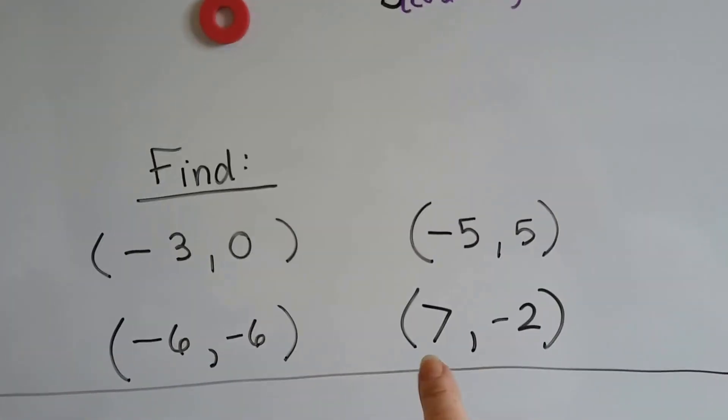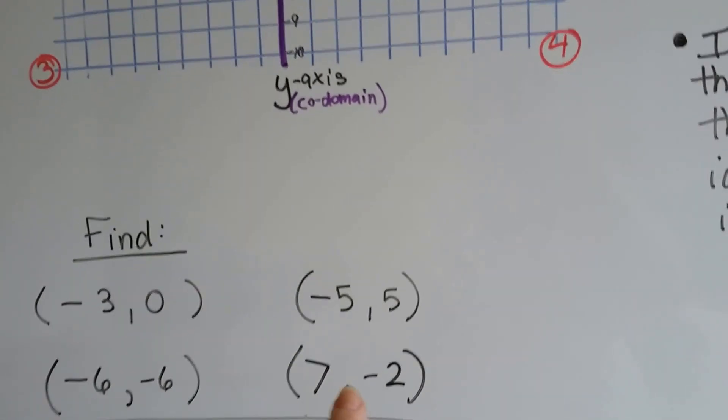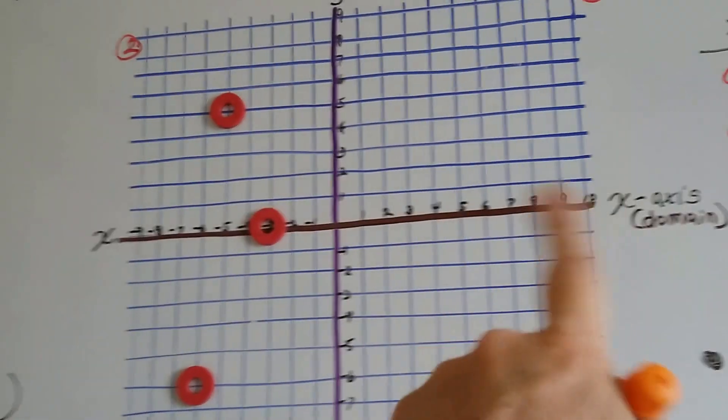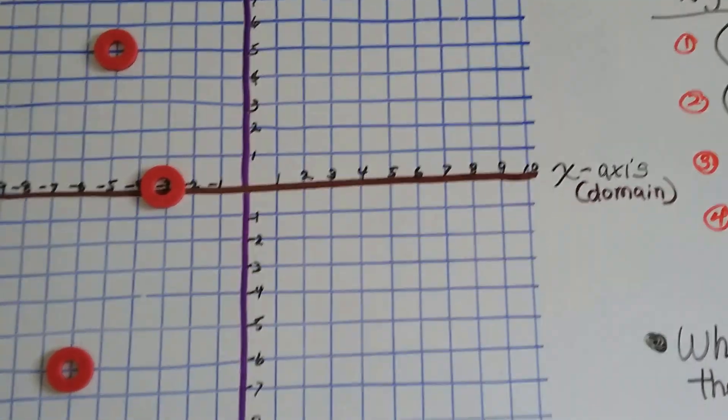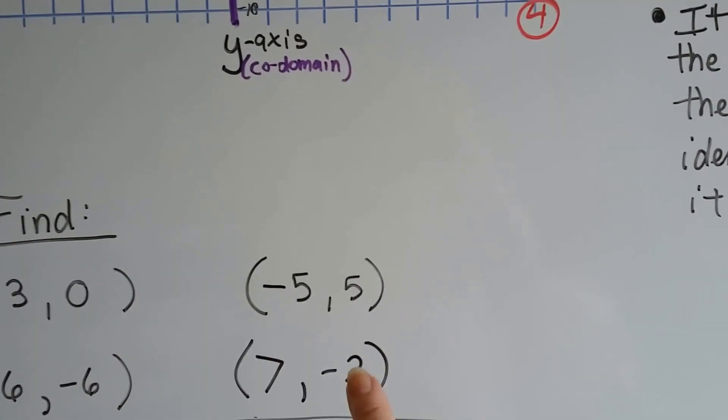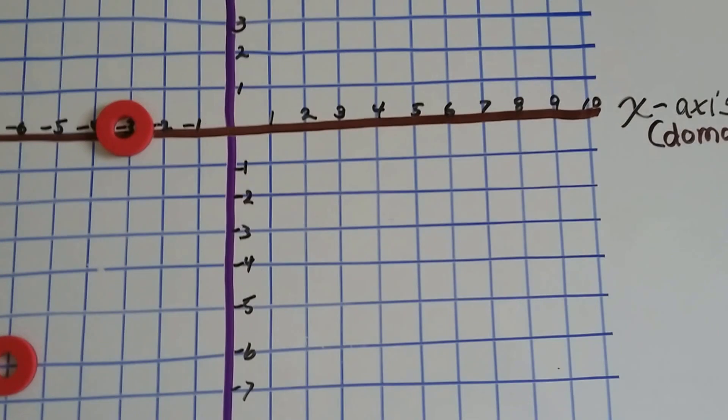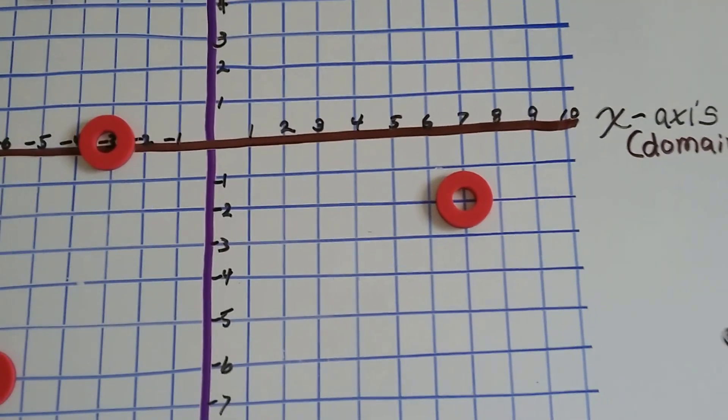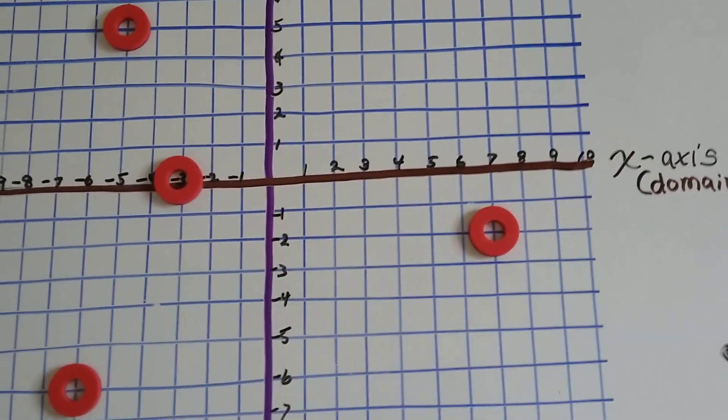And, then the last one is 7, negative 2. Where is 7, negative 2? So, the first number is positive on the x. So, it's going to be somewhere over here. Positive 7 is here. But, it wants us to find a negative 2. So, positive 7, negative 2 is going to be right there. Because, we need to come down to the negatives on the y.